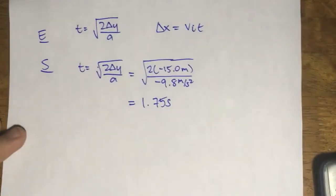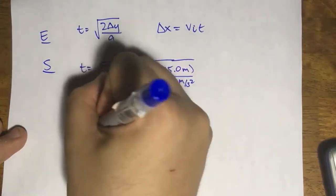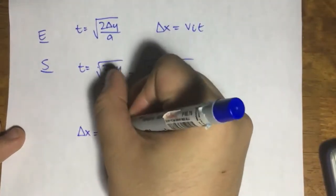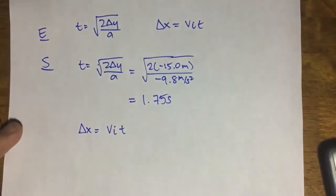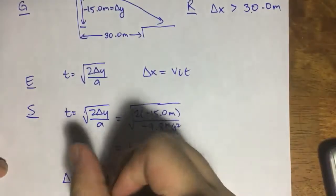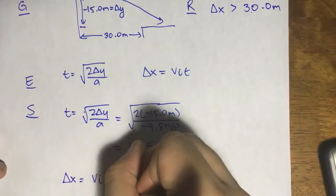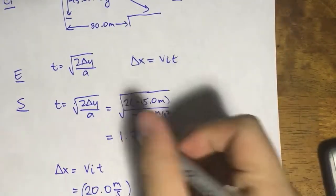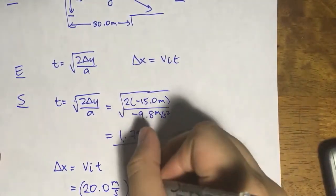Part 2 now involves me getting delta x. Delta x is equal to VI times T. We know VI to be given as 20 meters per second. And we just solved for T: 1.75 seconds.